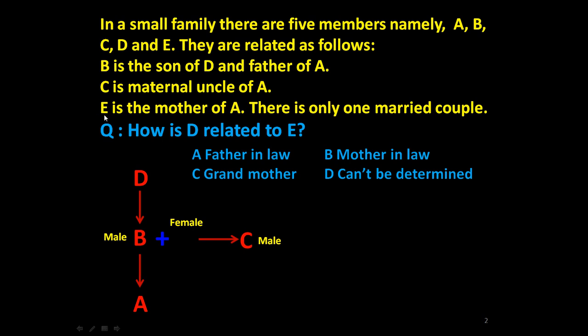Let us see statement 3. E is the mother of A. So E will occupy this position. There is only one married couple. Of course, married couple is B plus E. This is only one married couple. Now each and every information is incorporated in this family tree.